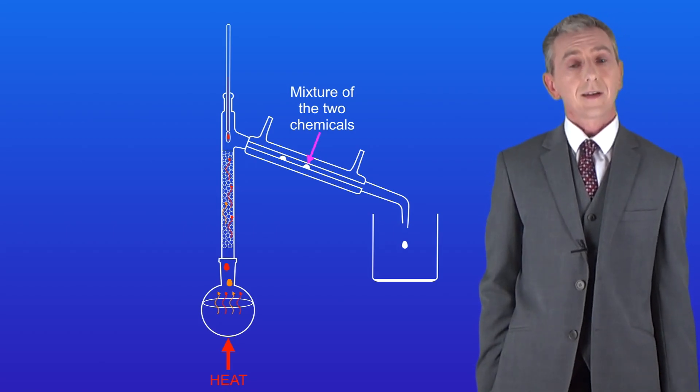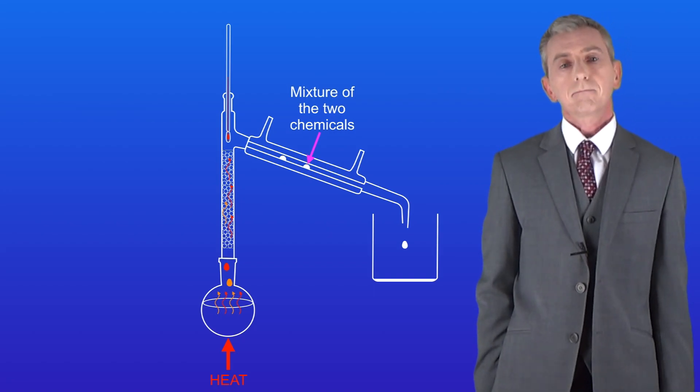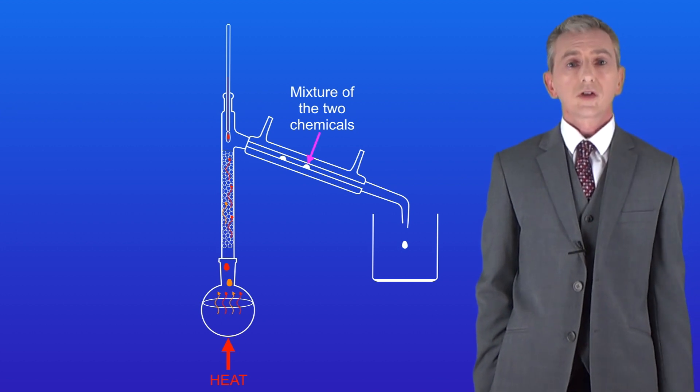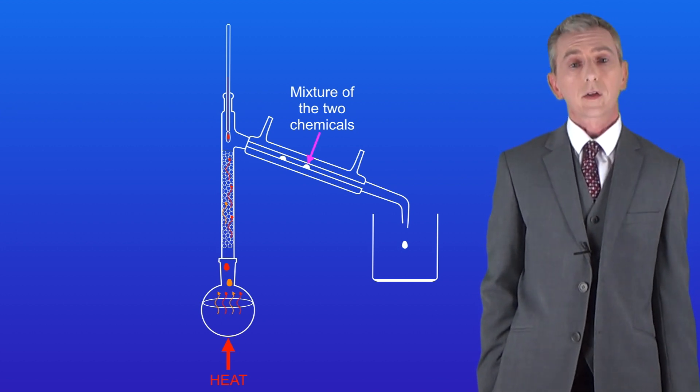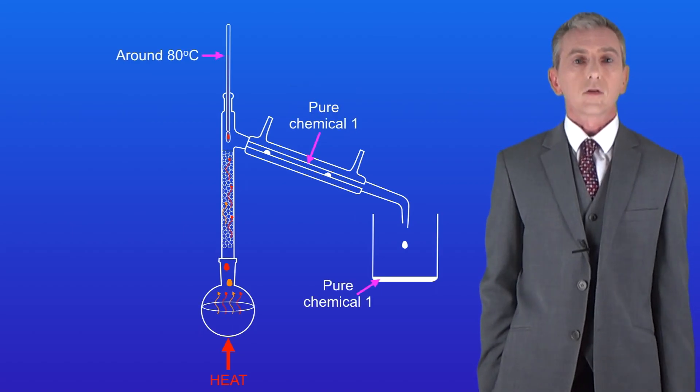These vapors now pass into the condenser and they turn back to a liquid, but again this is still a mixture of the two chemicals. Now there comes a point when the temperature on the thermometer reaches the boiling point of the first chemical and it stops rising. In this case, around 80 degrees Celsius.